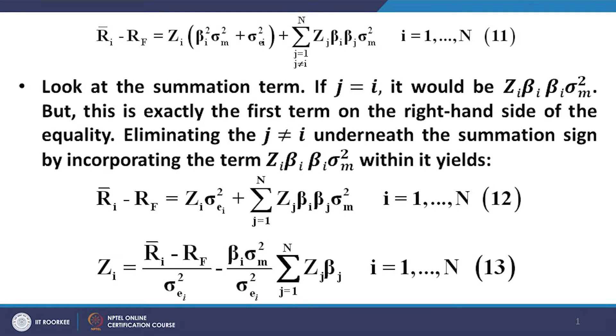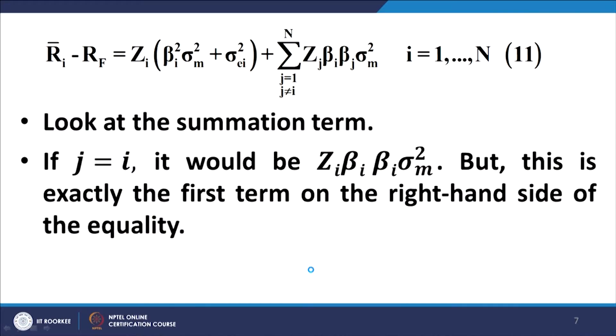This is equation number 11 brought forward from the previous slide. Looking at the summation term, it contains the constraint that j should not be equal to i — the summation extends over all values of j except i. Let us explore what we get when we substitute j = i: we get Z_i β_i² σ_m². This is precisely the first term on the right-hand side of equation number 11, which I am underlining.